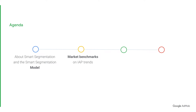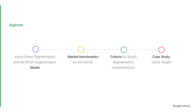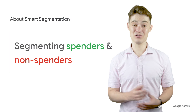Next, we'll highlight some in-app purchasing trends to illustrate why Smart Segmentation is such a powerful and useful tool. Afterwards, we'll present some criteria to consider when deciding if Smart Segmentation is right for your app. We'll also make a quick disclaimer about the optimal usage of Smart Segmentation. Finally, we'll share a story from a developer who has found success with Smart Segmentation.